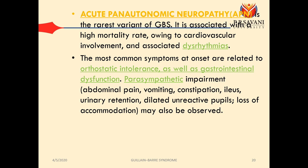The last type is acute pan-autonomic neuropathy (APN), the rarest variant, very rarely seen clinically, and associated with a high mortality rate. Death rate is quite high compared to other forms of GBS due to involvement of arrhythmias. Pan means everything — when everything in the autonomic nervous system gets involved, it leads to dysarrhythmia, heart dysfunction, and sinus tachycardia. The most common symptoms at onset are related to orthostatic intolerance, gastrointestinal dysfunction, parasympathetic impairments like abdominal pain, vomiting, dilated reactive pupils, and loss of accommodation.